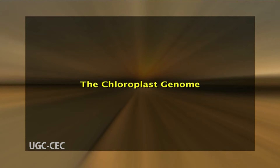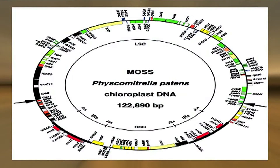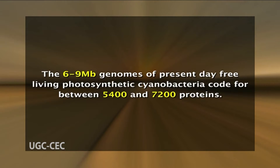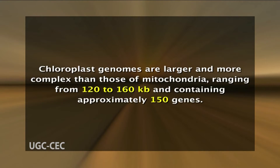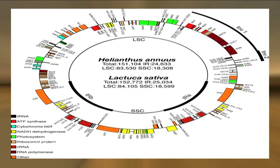Now the chloroplast genome. Like mitochondria, chloroplasts contain their own genetic system, reflecting their evolutionary origins from photosynthetic bacteria. The 6 to 9 megabase genomes of present-day free-living photosynthetic cyanobacteria code for between 5,400 and 7,200 proteins. Like those of mitochondria, the genomes of chloroplasts consist of circular DNA molecules, present in multiple copies per organelle. However, chloroplast genomes are larger and more complex than those of mitochondria, ranging from 120 to 160 kilobases and containing approximately 150 genes. The chloroplast genomes of several plants have been completely sequenced, leading to the identification of many of the genes contained in the organelle DNAs.